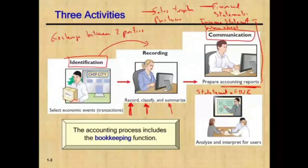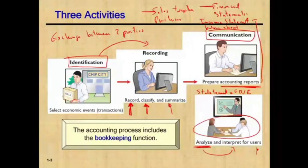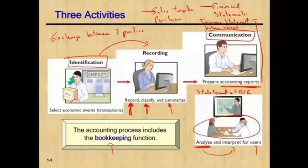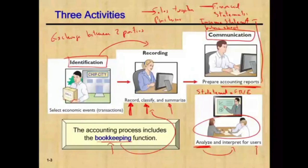We send this information to users who will analyze and interpret it. The purpose of accounting is to give users good information to help them make better decisions about the company — that's basically what it is. We also have a term called bookkeeping. Bookkeeping is the process of recording transactions, and it's part of the accounting process. We record transactions in chronological order, meaning by date.